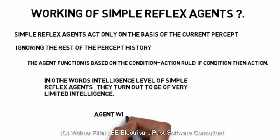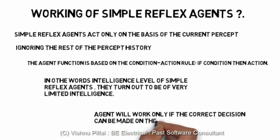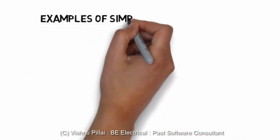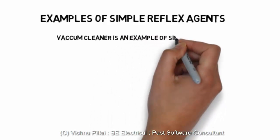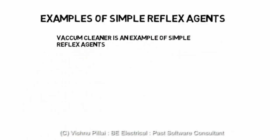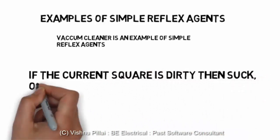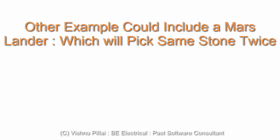If there is dust, then the vacuum cleaner will suck — that is the basic function of a vacuum cleaner based on the if-condition. The intelligence level of simple reflex agents turns out to be very limited. The vacuum cleaner works in two motions — left and right — and has an action to suck out the dust. If the current square is dirty, it will suck; otherwise it will move to the other square without any consideration.